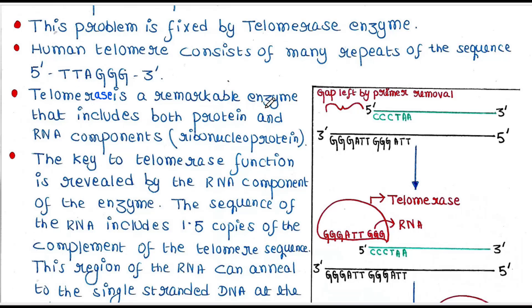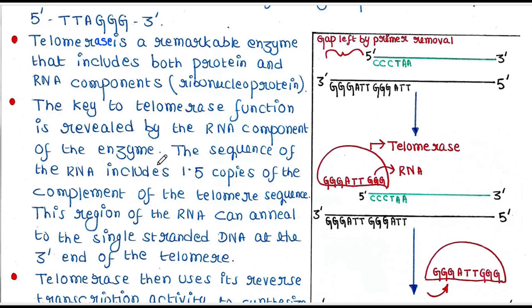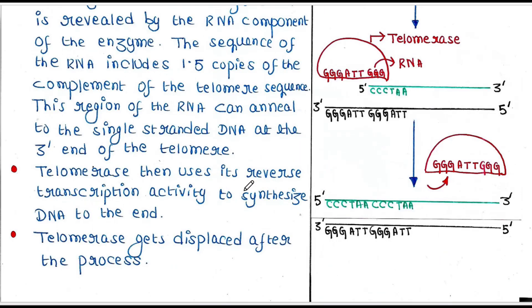Telomerase is a remarkable enzyme that includes both protein and RNA components, which is why it is called a ribonucleoprotein. The key to telomerase function is revealed by its RNA component. The sequence of the RNA includes 1.5 copies of the complement of the telomere sequence — specifically GGGATT-GGG — meaning it is the complementary sequence to the DNA end. This region of the RNA can anneal to the single-stranded DNA at the 3' end of the telomere.